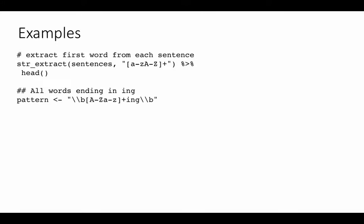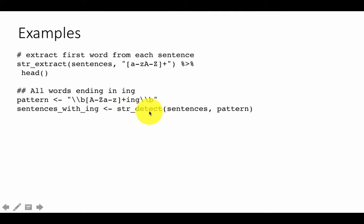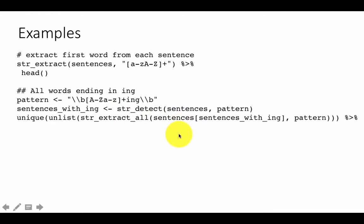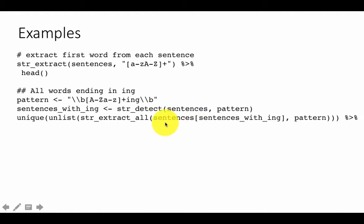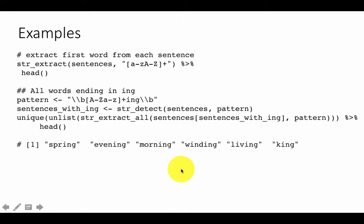For words ending in 'ing': the word has one or more characters followed by 'ing' and a word boundary. We do it in two steps — first `str_detect` to get a boolean vector of sentences containing a word with 'ing', then use that to `str_extract_all` the matches of the pattern.